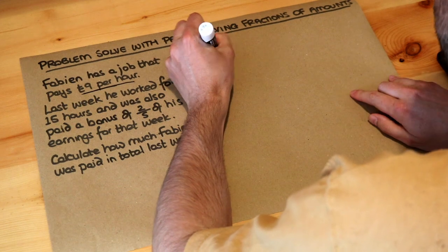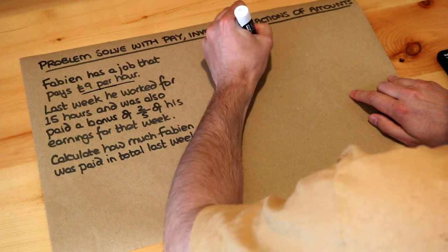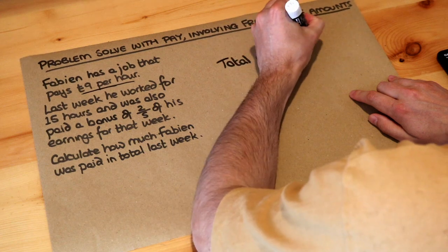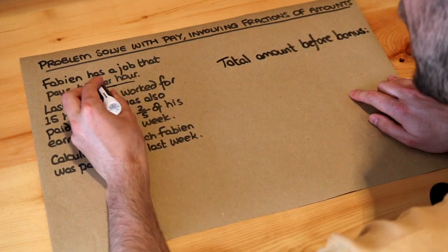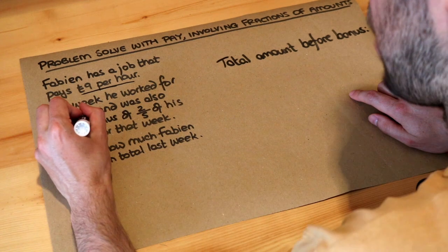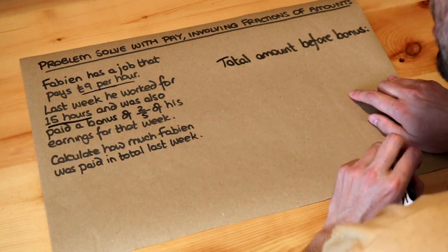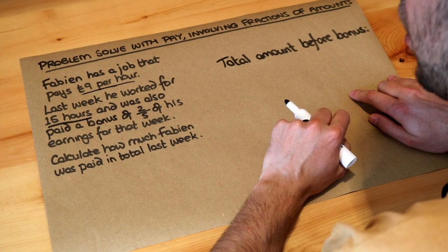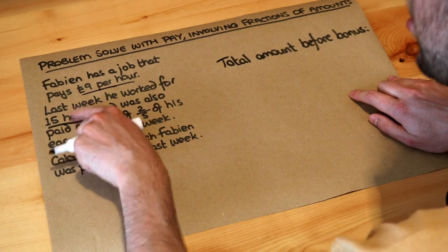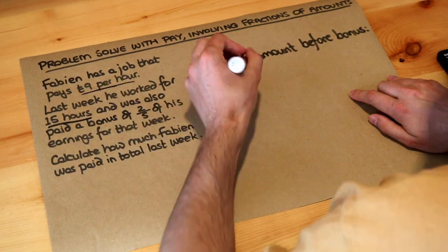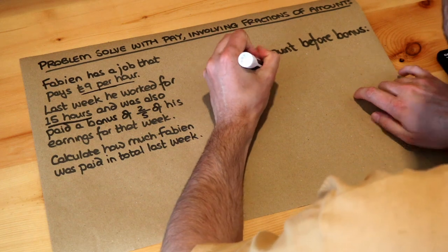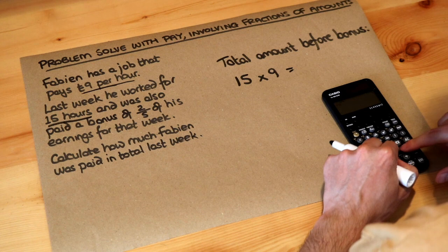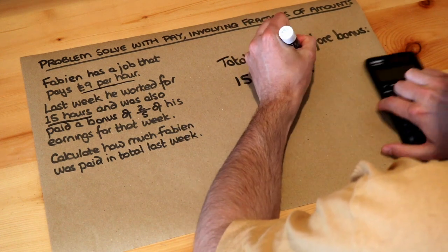So let's work out the total amount he was paid before the bonus. He was paid £9 per hour and he worked for 15 hours, so his total pay is just 15 lots of 9. Worked 15 hours, each hour was £9, so you do 15 times 9. I'm just going to use my calculator for that — 15 times 9, which is £135. So that was his pay for the week.